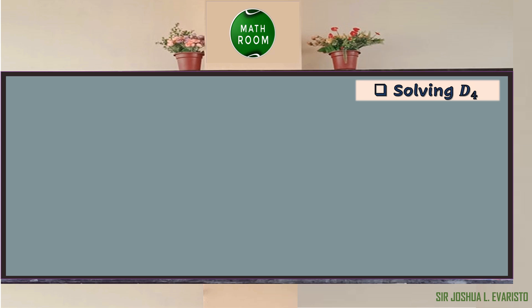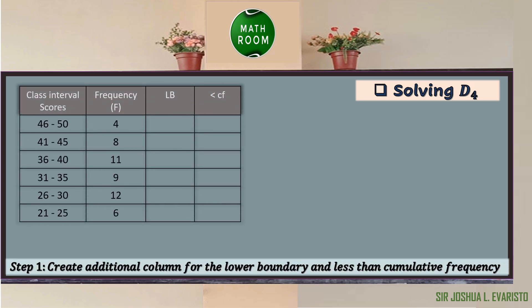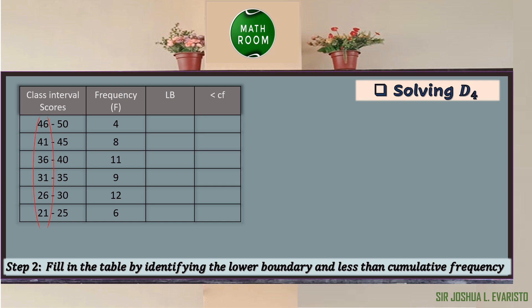To solve for the 4th decile, the first step is to create additional columns for the lower boundaries and the less than cumulative frequency. Step 2 is to fill in the table by identifying the lower boundary and less than cumulative frequency. To identify the lower boundary, we subtract 0.5 from the lower limit of each class. So we have: 21 minus 0.5 is 20.5; 26 minus 0.5 is 25.5; 31 minus 0.5 is 30.5; 36 minus 0.5 is 35.5; 41 minus 0.5 is 40.5; and 46 minus 0.5 is 45.5. To get the less than cumulative frequency, we start with the first class — the one with the lowest lower limit — and copy its frequency.